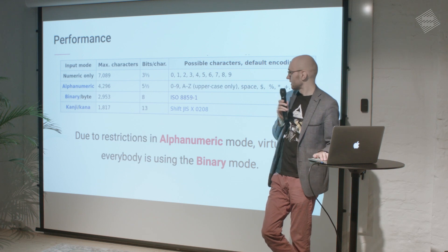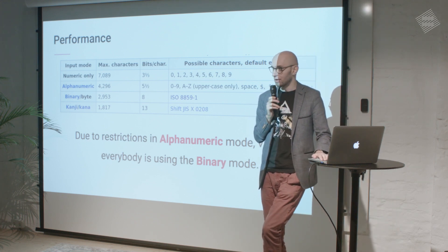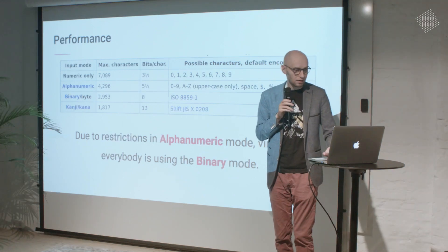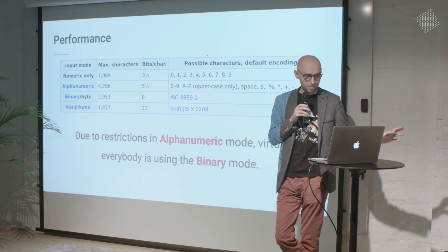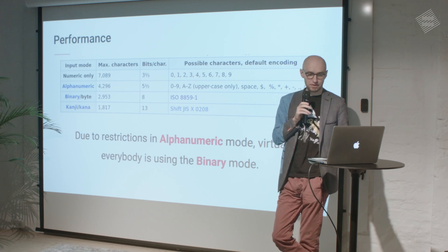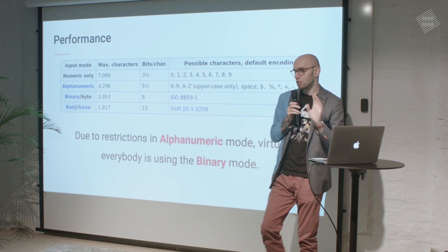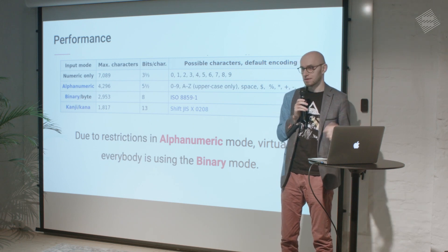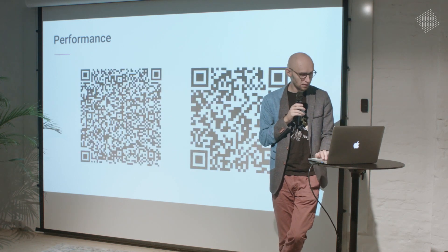In terms of performance — this is a protocol standard, so there's no code to optimize because it's just a document. But looking at QR codes, there's a nice table from Wikipedia. There are a couple of modes you can encode a QR code in: numeric, alphanumeric, binary, and kanji. Here are two QR codes — they're both encoded in binary mode.